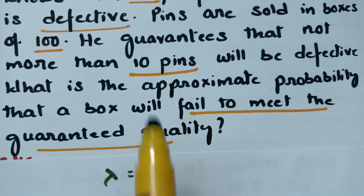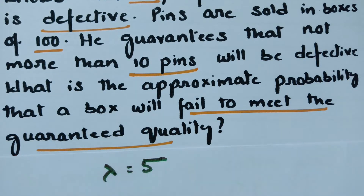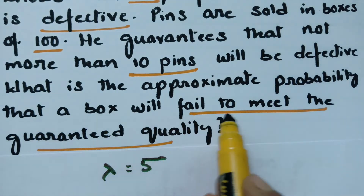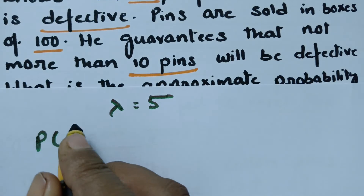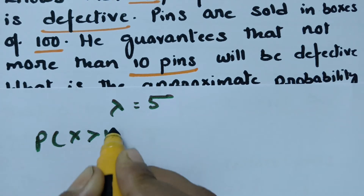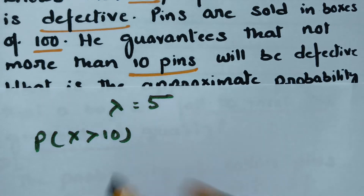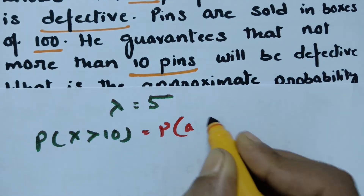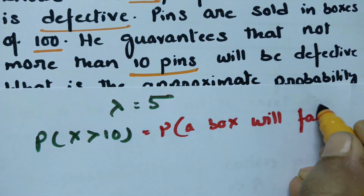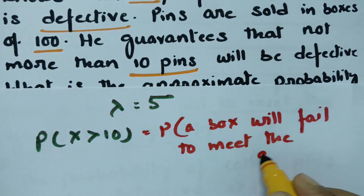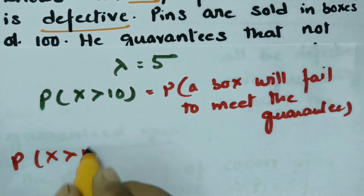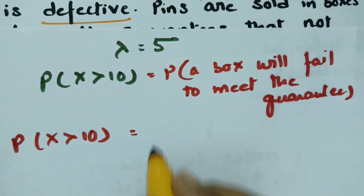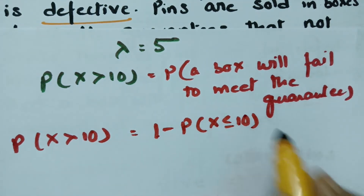He guarantees that not more than 10 pins will be defective. What is the approximate probability that the box will fail to meet the guaranteed quality? If he fails, the defective pins must be more than 10, i.e., P(X > 10). Since computing this directly is lengthy, we use: P(X > 10) = 1 − P(X ≤ 10).